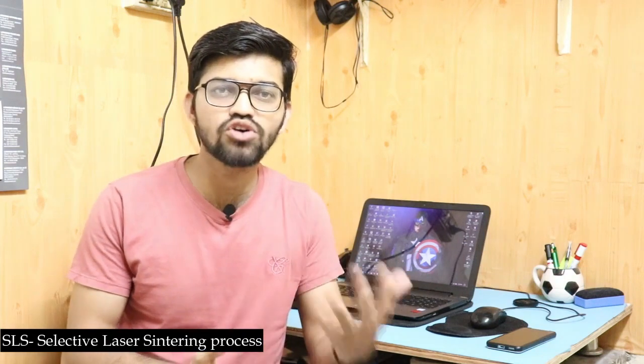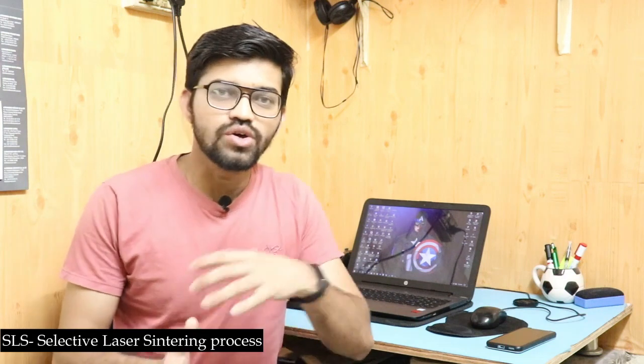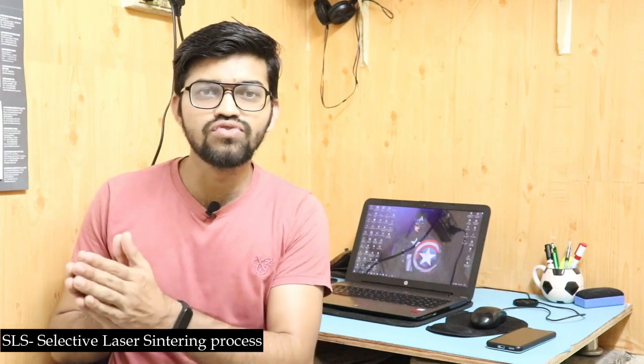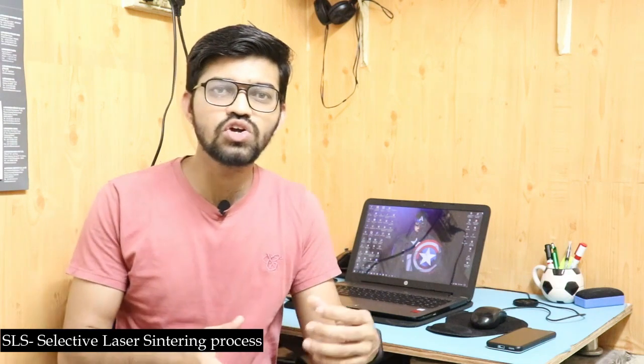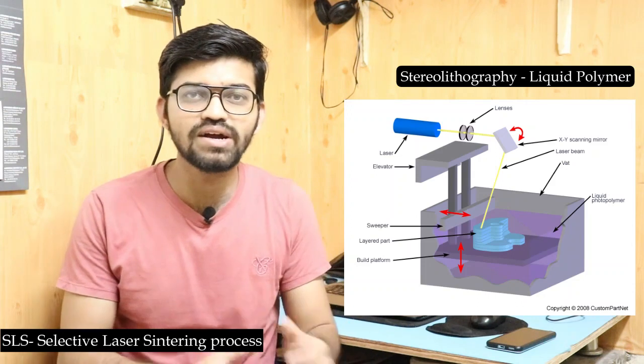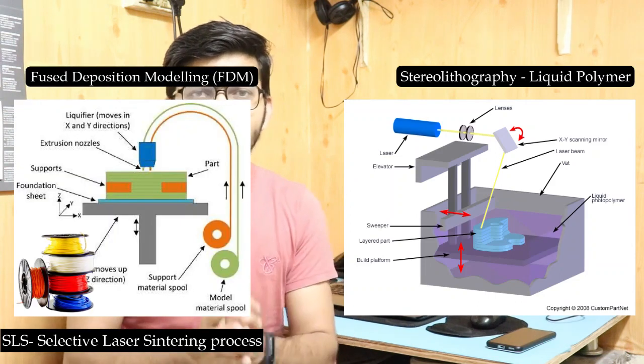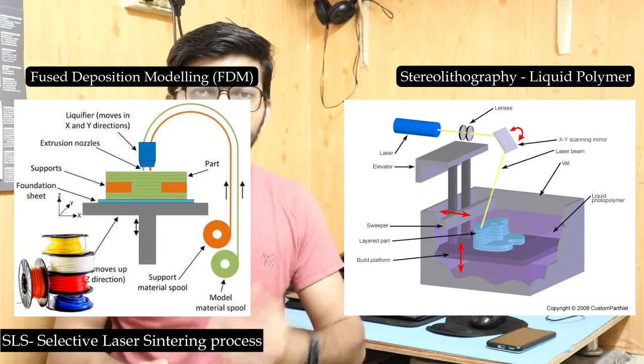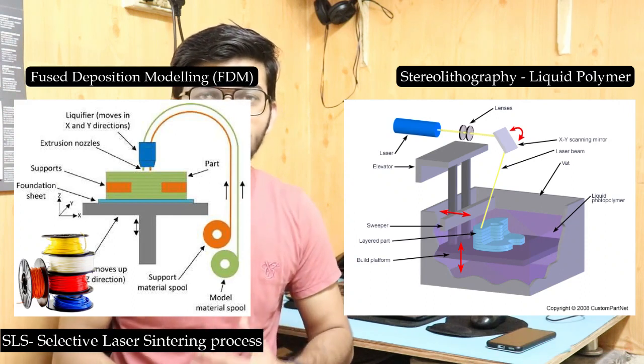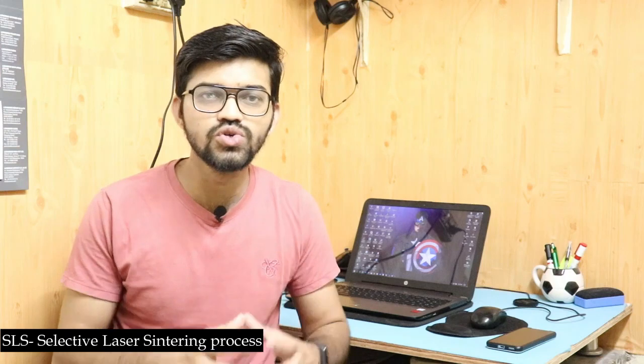Selective Laser Sintering is a kind of 3D printing technology, also called rapid prototyping or additive manufacturing. It is very similar to stereolithography and fused deposition modeling. In stereolithography we used a liquid polymer, and in fused deposition modeling we used plastic filaments. In SLS, we use material in powder form.